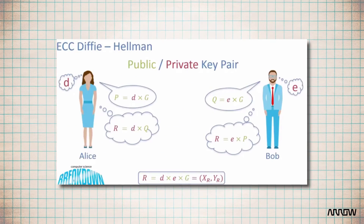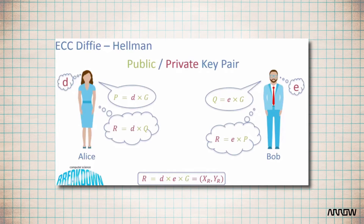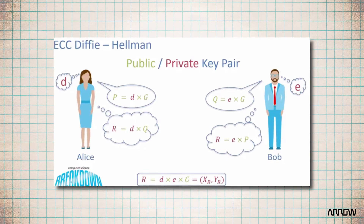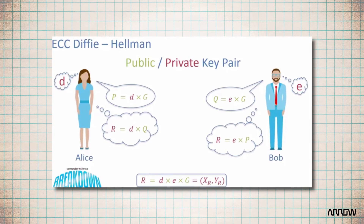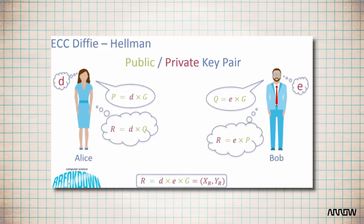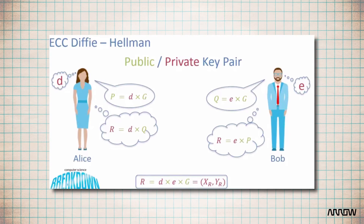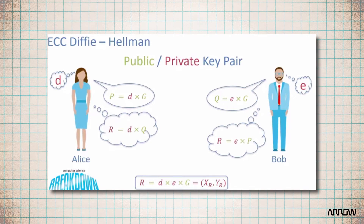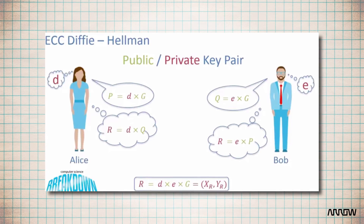Imagine G is a public key and D and E are the private keys. Alice can send P = D × G, and then P and G are known to an attacker, but there's no known mathematical tool to find D. The same thing can happen for Bob and his private key. Alice and Bob can then calculate a new key R = D × E × G. They then have a common key to encrypt their messages and an eavesdropper cannot calculate it, so they can hear each other but nobody else could understand that data.